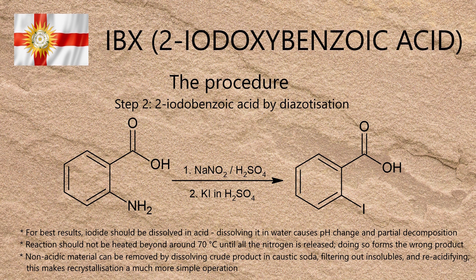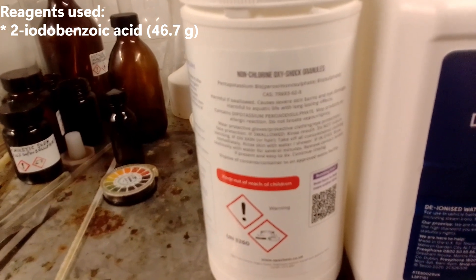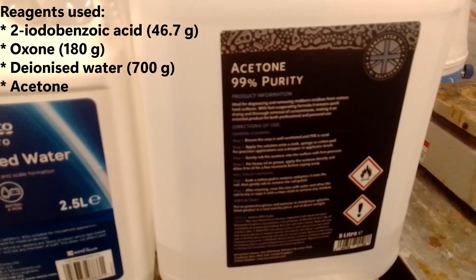In the last step, which forms IBX itself, the iodine in the 2-iodobenzoic acid is oxidised from minus 1 to plus 5. Traditionally this was done with potassium bromate, but a 1999 paper by Frigerio, Sant'Agostino and Sputari showed this can be done efficiently with oxone. This is a powerful and remarkably cheap oxidising agent based on potassium monopersulfate that's readily available as non-chlorine pool shock. It also has the advantage that unlike the bromate oxidation, it doesn't produce elemental bromine during the reaction, which is nasty stuff, especially at high temperatures. Reagents used were 2-iodobenzoic acid, 46.7g; oxone, 180g; deionised water, 700g; and acetone.